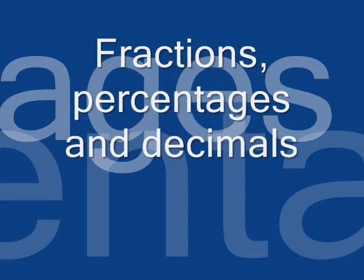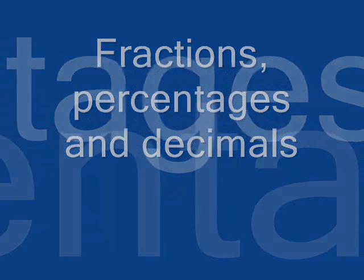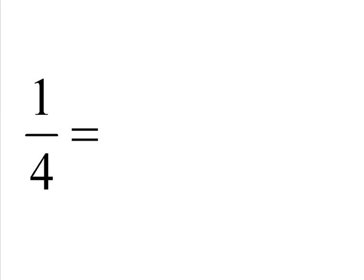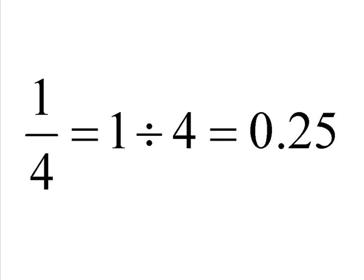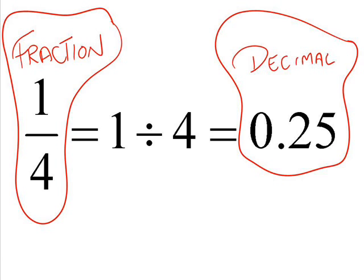So we're going to explore this relationship between fractions, percentages, and decimals. And we'll start out by looking at a quarter. One quarter, quite literally, means 1 divided by 4. And 1 divided by 4, if you work it out, is 0.25. So what you probably realize here is the fraction of a quarter equals the same as the decimal, which is 0.25.